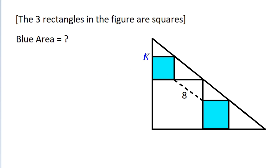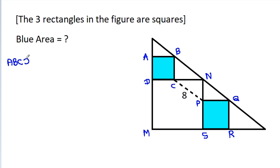So, suppose the vertices are A, B, C, D and P, Q, R, S and M, N. Then A, B, C, D and P, Q, R, S and M, D, N, S — they are squares.